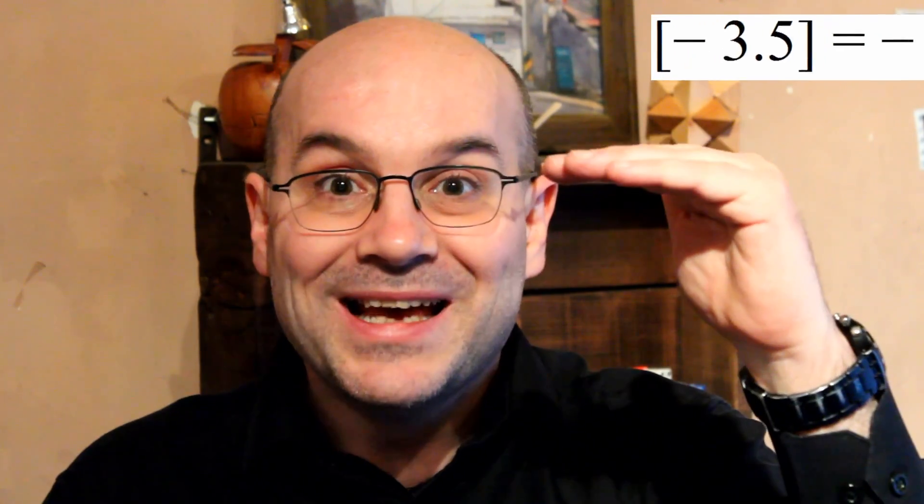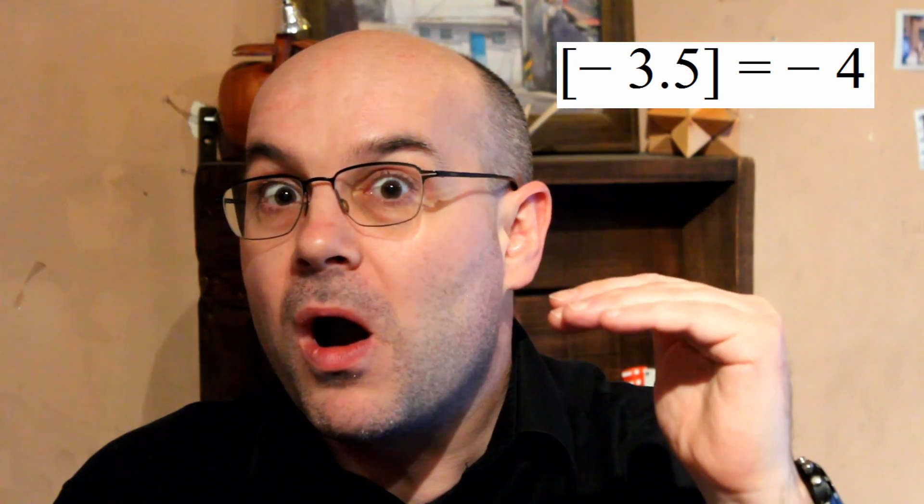Be careful: when your number is negative, it gets a little tricky. When your number is positive like 3.5, you take the integer just below. When your number is negative, you still take the integer just below — but the integer below -3.5 is -4, not -3. So be careful about this.